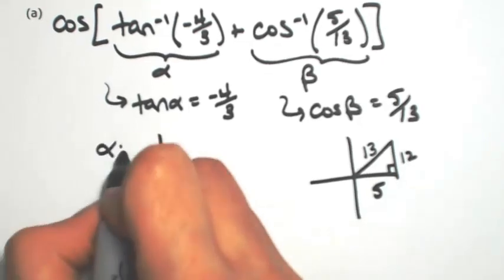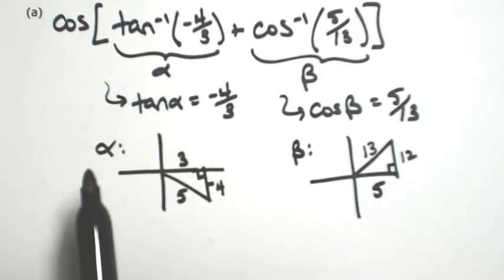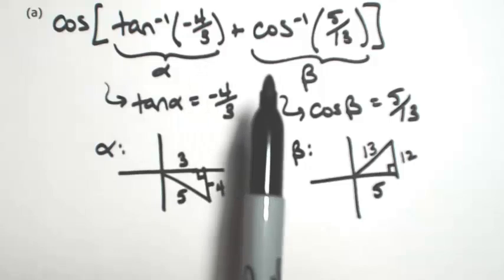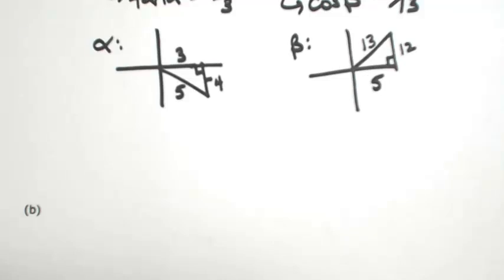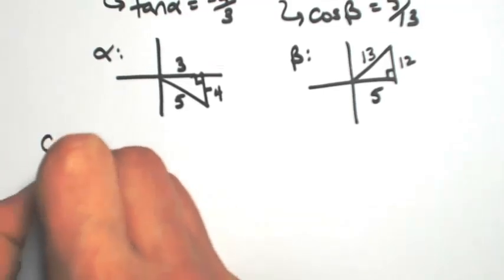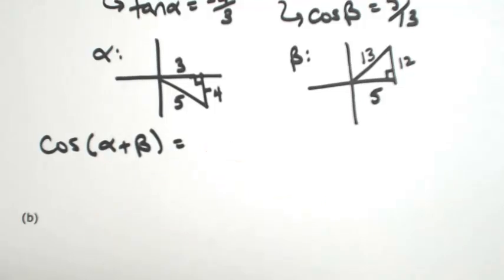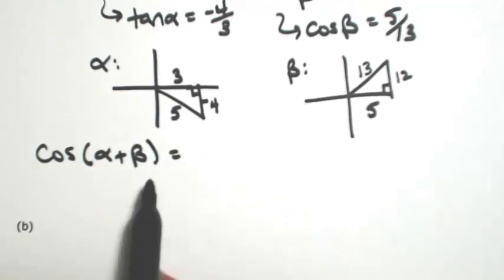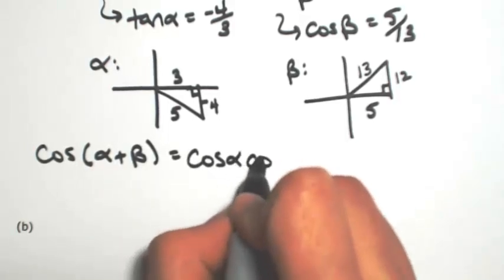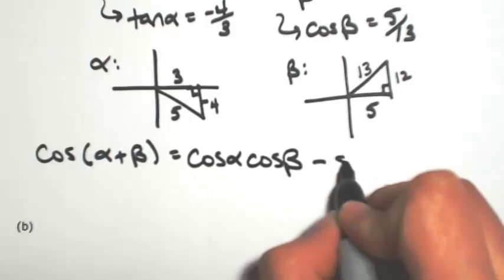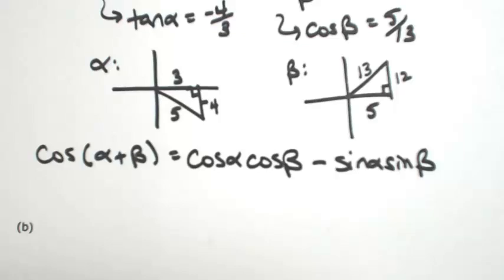The first angle was alpha and the second was beta. Rewriting the original problem as cosine of alpha plus beta, we can expand using the sum formula. For cosine, it's cosine cosine minus sine sine — that is, cosine of alpha times cosine of beta, minus sine of alpha times sine of beta.